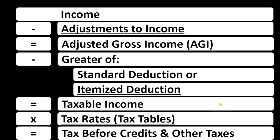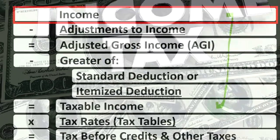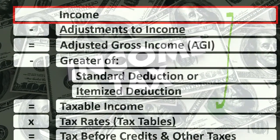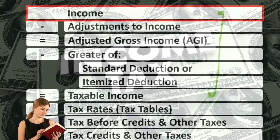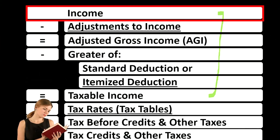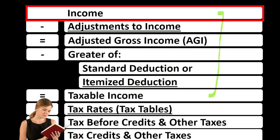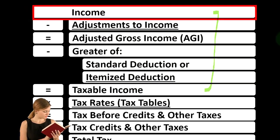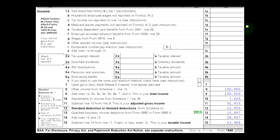Looking at the income tax formula, we're focused on line one income. The first half of the income tax formula is, in essence, an income statement — just an outline, just a scaffolding with other forms and schedules flowing into these line items. For example, the Schedule C, the small business form, is in essence an income statement with income minus business expenses, and the net income flows into line one on the income tax formula.